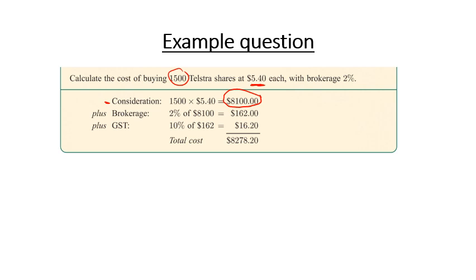So it's going to cost us $8,100 to buy these shares. But we then need to add in our brokerage fee because it says the brokerage is 2%. So we now find 2% of $8,100. So in order to do that, we go 2%, which is 0.02, and we multiply that by 8,100. And that'll give us an answer of $162.